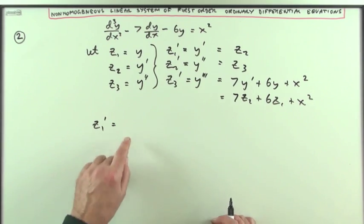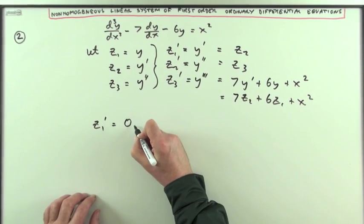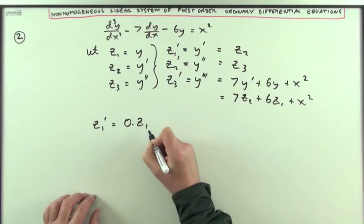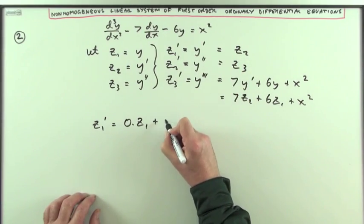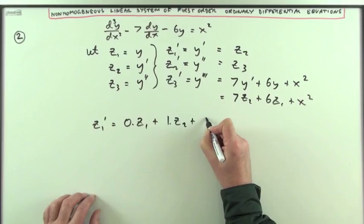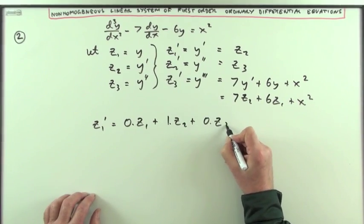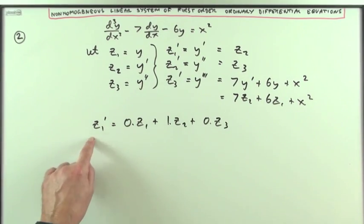So I'll specifically say, I've got no lots of z1, I've got one lot of z2, and no lots of z3. z1 dashed turned out just to be z2.